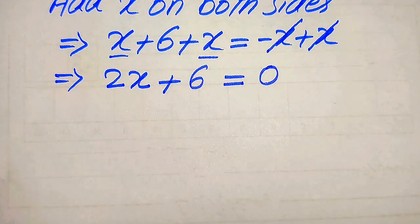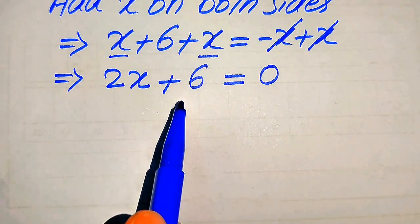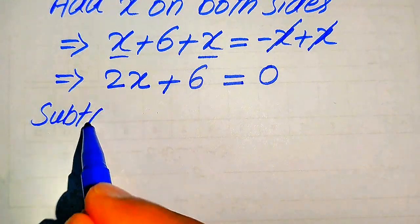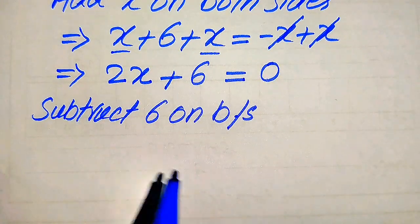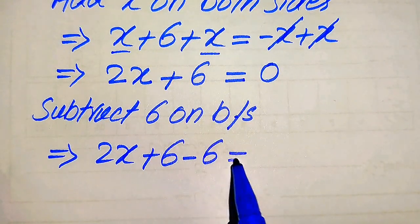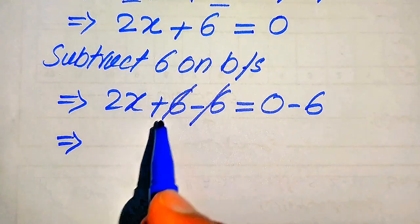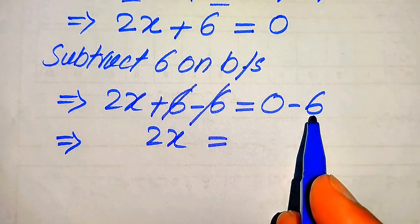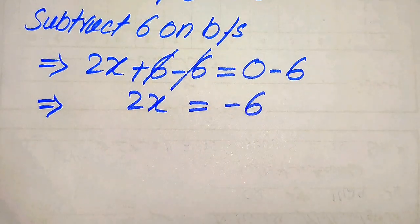Because we are solving for x, we need to move the constant term to the right hand side. In order to move 6 to the right hand side, we subtract 6 on both sides. This gives us 2x plus 6 minus 6 equals 0 minus 6. The positive and negative 6 cancel, leaving 2x equals minus 6.